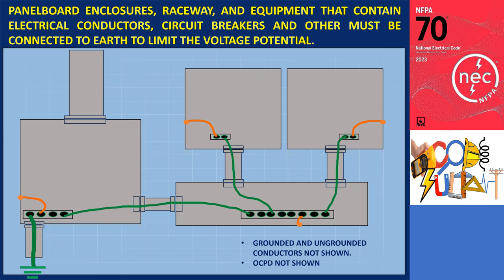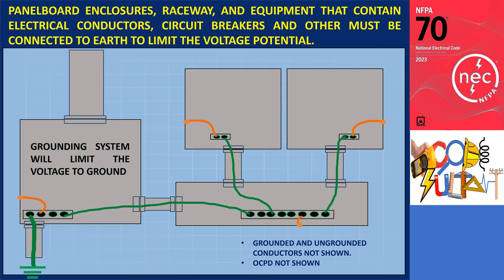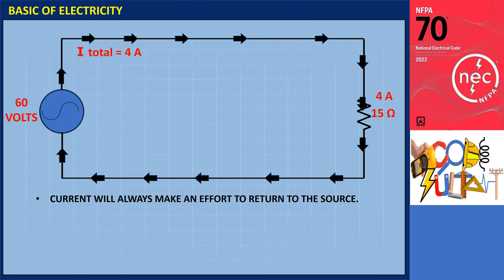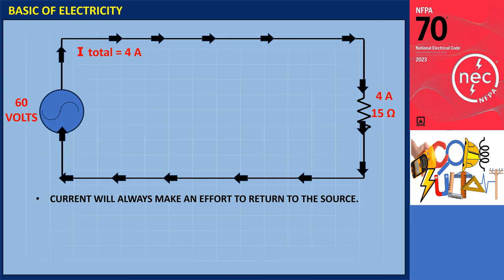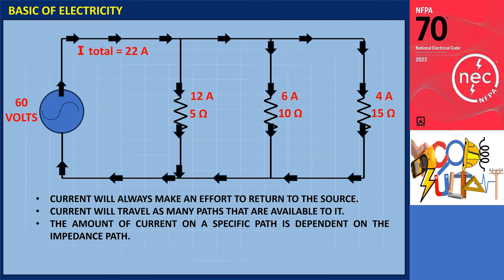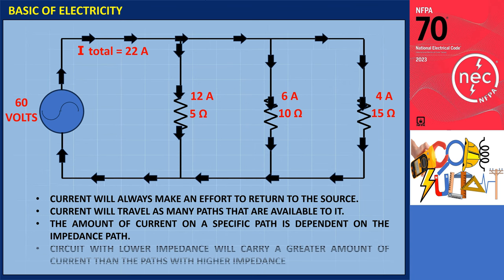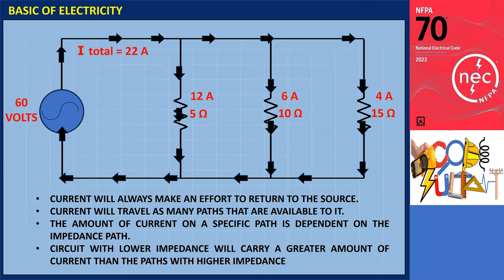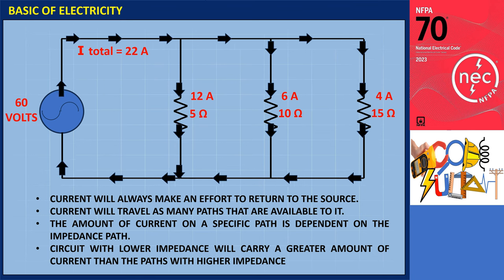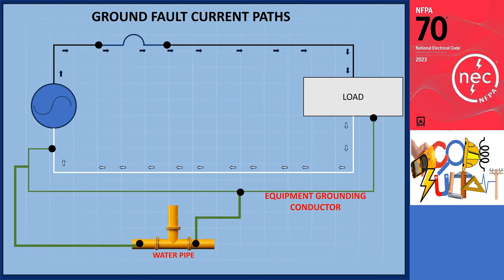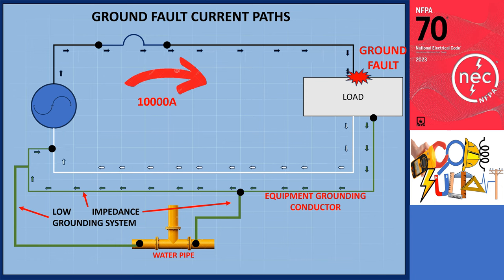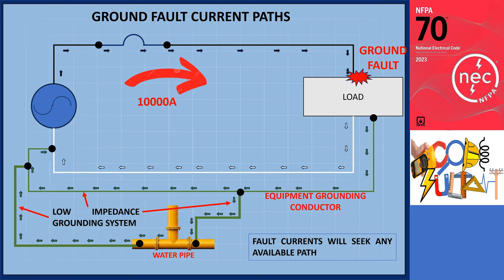If the installation of grounding complies with the prescriptive methods of this article, the grounding system will limit the voltage. When a fault or surge occurs, the grounding system redirects the excessive current to the ground, preventing it from causing damage or posing a risk to people and equipment. The term 'limit' is used because the grounding system will not eliminate the voltage to ground on the materials. Current will naturally flow through all available paths, dividing among them inversely proportional to the impedance of each path — so paths with lower impedance carry greater current.